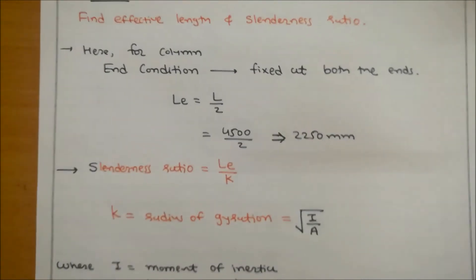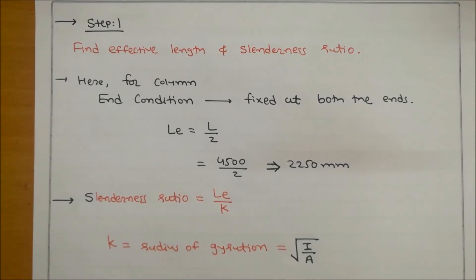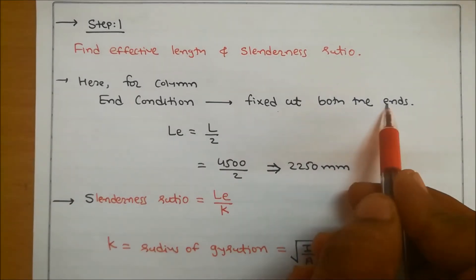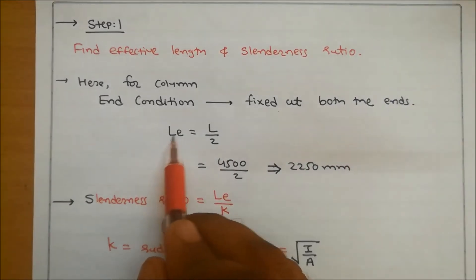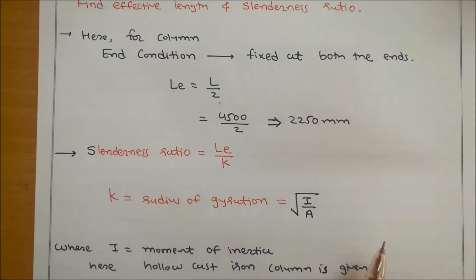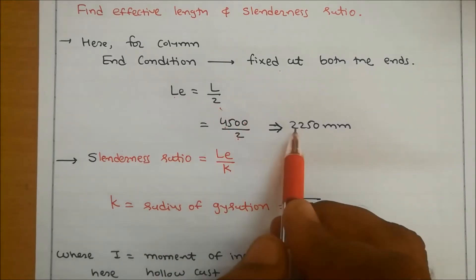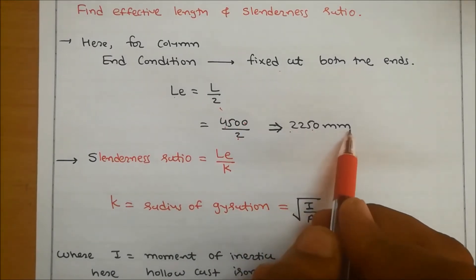Step 1: Find effective length and slenderness ratio. Since the column is fixed at both ends, the equivalent length Le = L/2 = 4500/2 = 2250 mm.